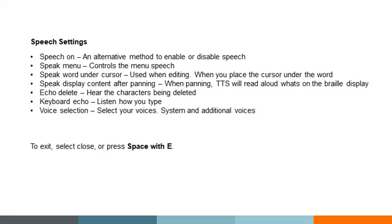The next option is Speak Display Content After Panning. This relates to the use of your inner thumb keys. If you just want to read continuously in Braille without speech, you would turn this off. If you want every time you press your inner right thumb key and pan your Braille forward to have that content spoken, this will allow you to do so. This is helpful if you want speech to follow the Braille display exactly as you pan — not auto-scrolling, but words spoken as shown on the display.